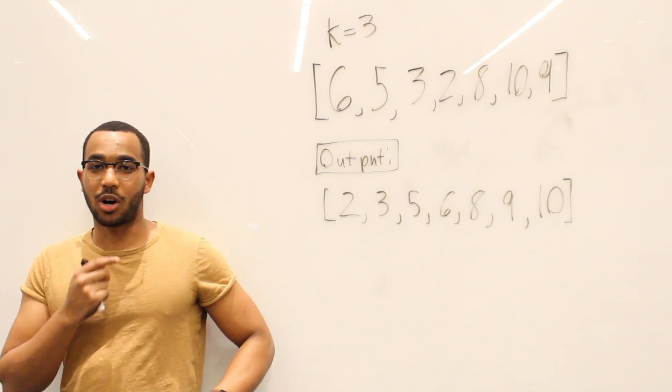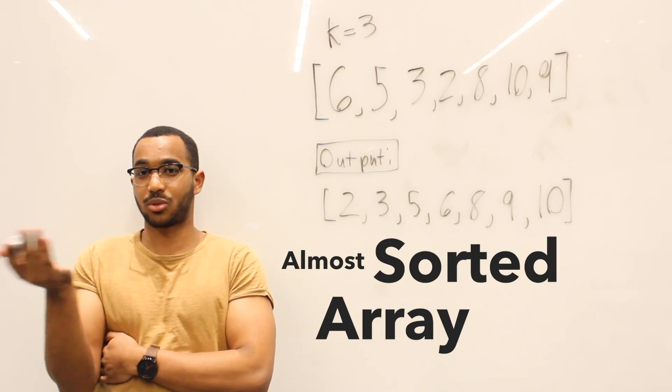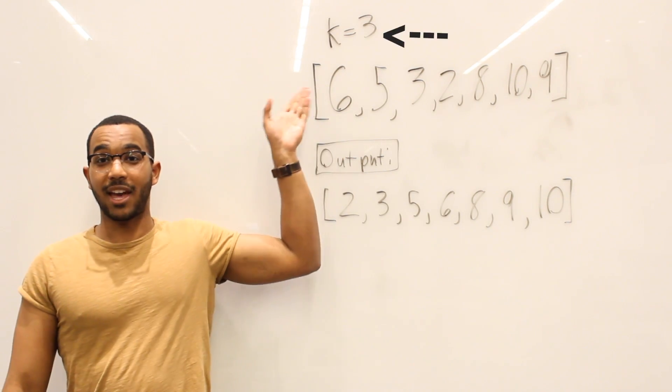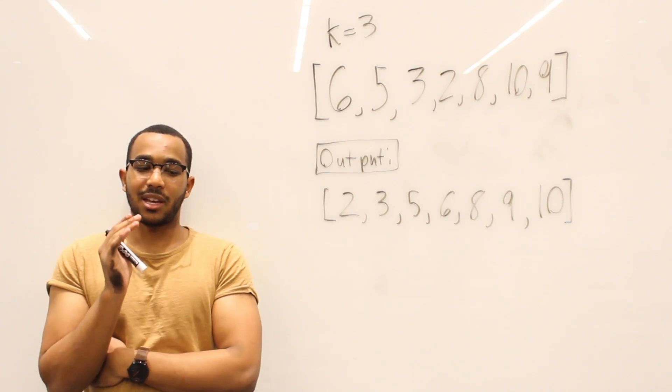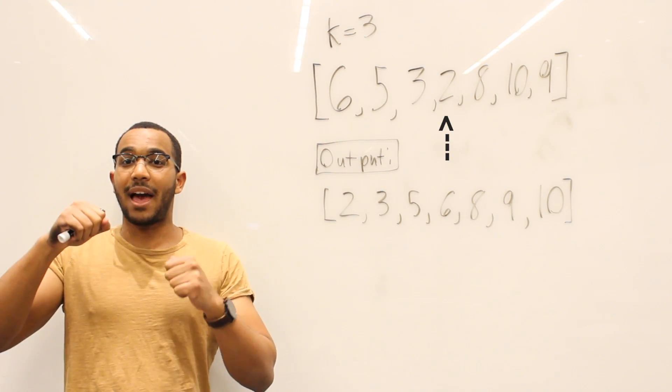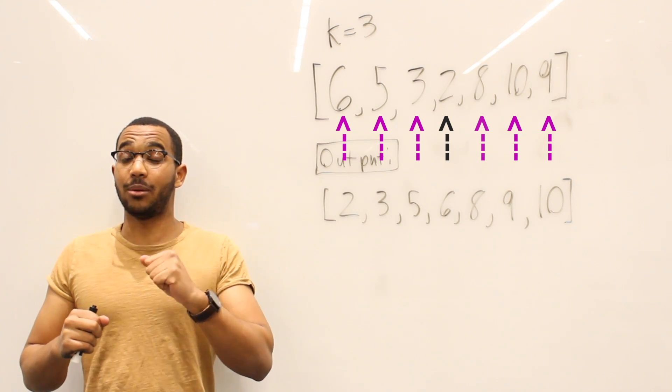So today's problem is called K-sorted array or almost sorted array. The problem is you get an array, you get K. So what K represents is the final resting place of each element is at maximum K distance from where the present element sits.